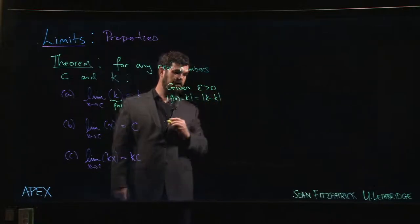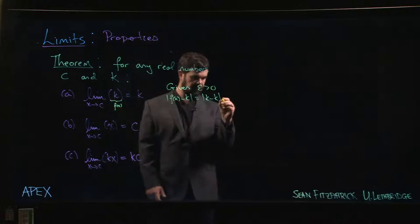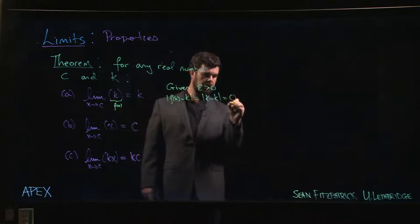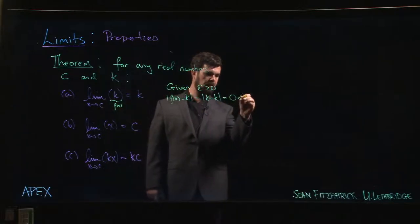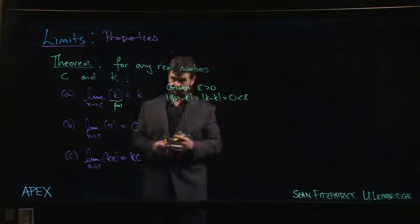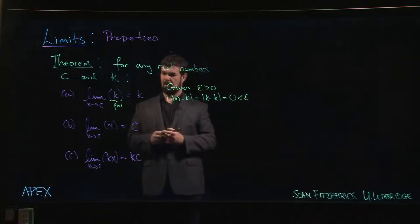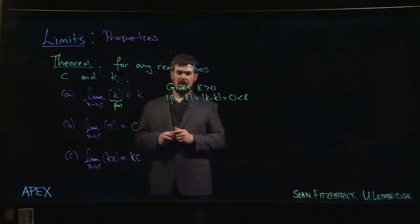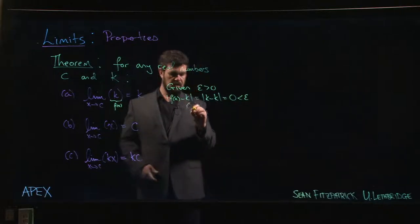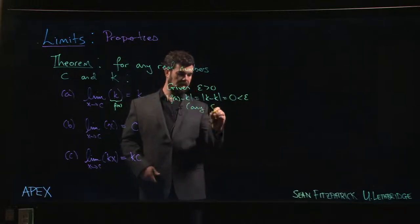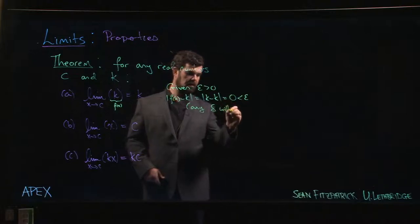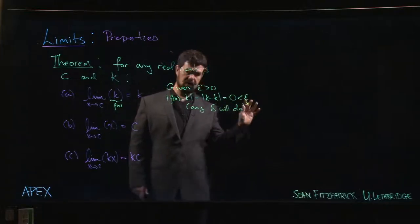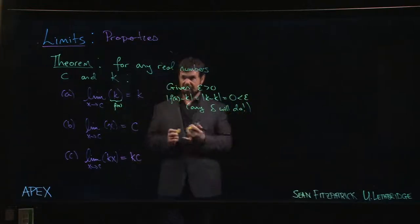That's zero, and zero is more or less by definition less than epsilon. That's part of the definition: epsilon has to be greater than zero. So any delta will do. This is probably the easiest epsilon-delta proof you'll ever do.